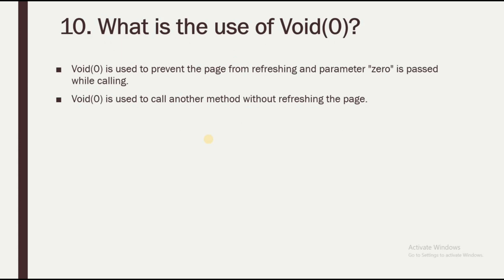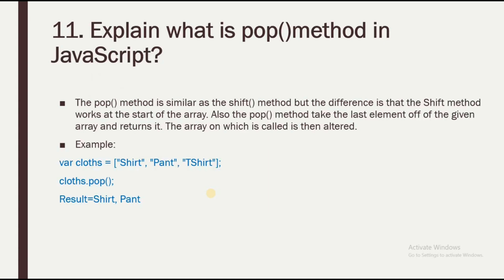The tenth question is: what is the use of void in JavaScript? Void is used to prevent the page from refreshing, and parameter zero is passed while calling it. void(0) is used to call another method without refreshing the page, similar to an AJAX function.